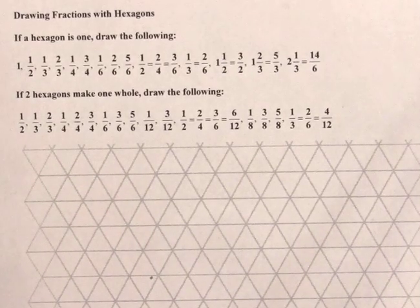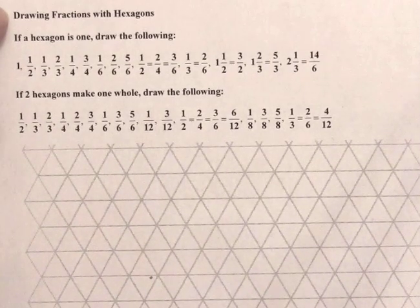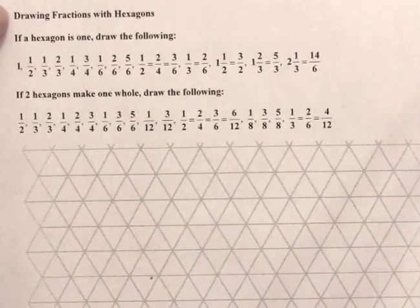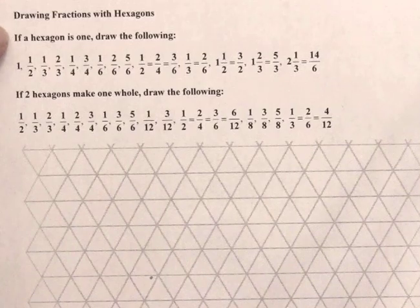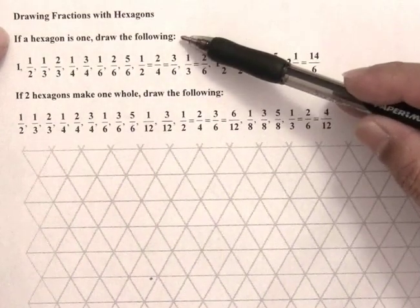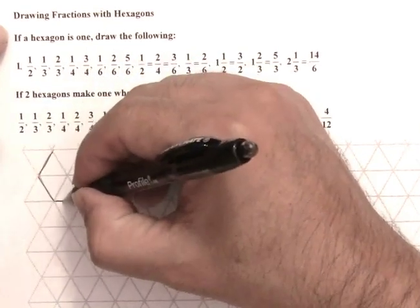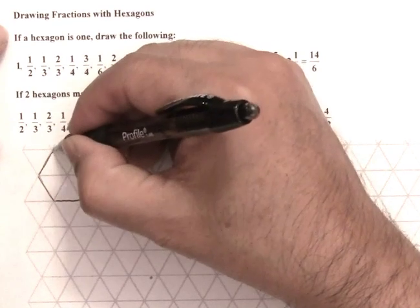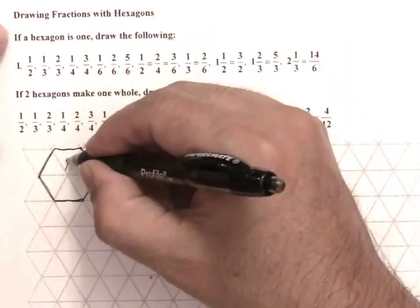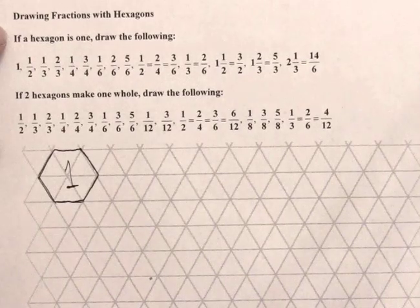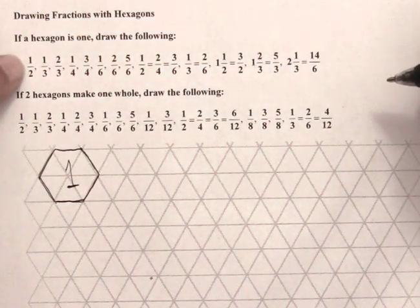In this activity we are asked to draw some rational numbers, some fractions, using hexagons. We're going to be using hexagons on this paper. It says if a hexagon is one, draw the following. So they're telling us that a hexagon is one — so this is one. There's one right there.